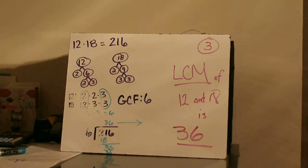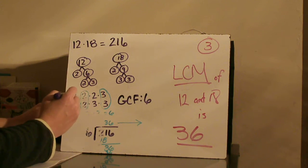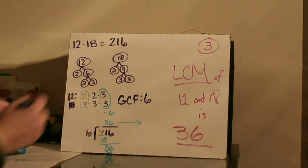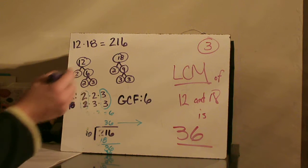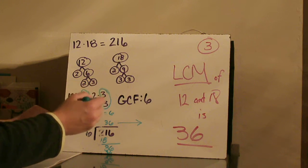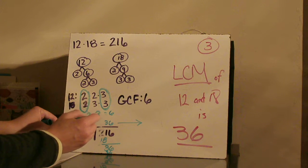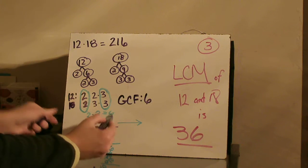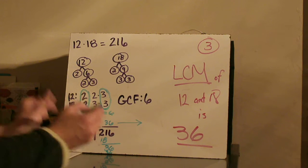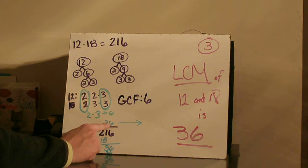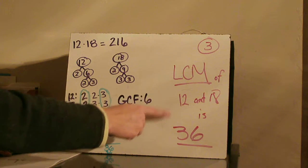Question number three: the least common multiple of 12 and 18. I said 12 times 18 and got 216. I then used my factor tree to determine the prime factors, lined them up, and found that I had a set of twos that match and a set of threes that match. So I said 2 times 3, because those were my matching numbers, and I got 6 for the GCF. Then in step three, I took my product of 216 and divided it by my GCF of 6 — 216 divided by 6 is 36. So the least common multiple of 12 and 18 is 36.